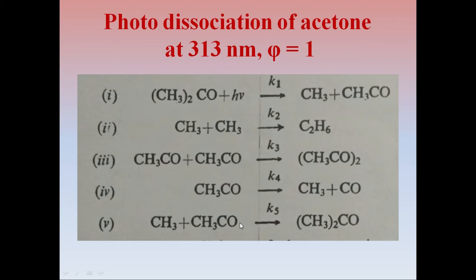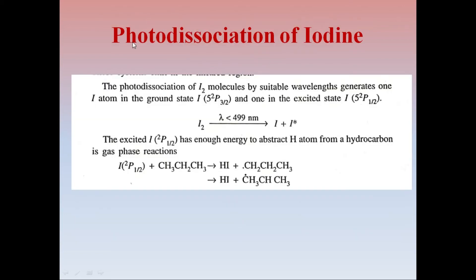Now let us see the next reaction. Photodissociation of iodine. The photodissociation of iodine molecule with suitable wavelength generates one iodine atom in ground state and one iodine atom in excited state. The excited iodine atom has enough energy to abstract hydrogen atom from any hydrocarbon in gaseous phase, and there is formation of HI.